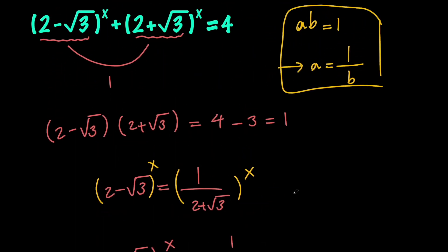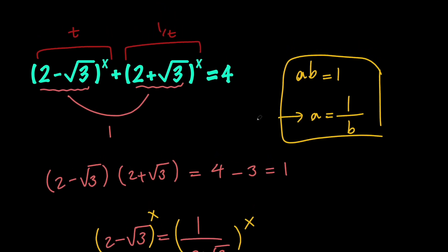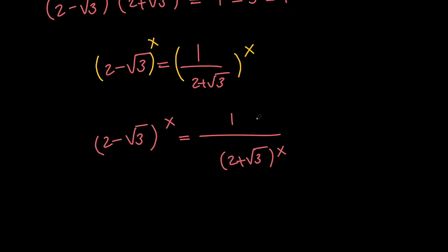So that means that if I go ahead and replace this one with something like t, this one is going to be 1 over t, right? So let's go ahead and do that. Let's say that t equals 2 minus root 3 to the x power. This means that we will have t plus 1 over t equals 4.